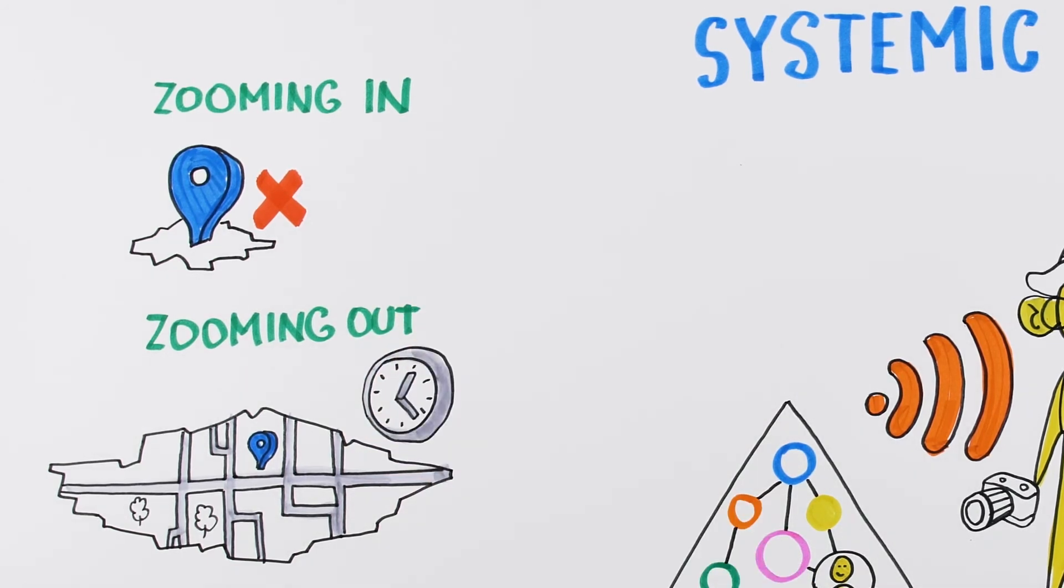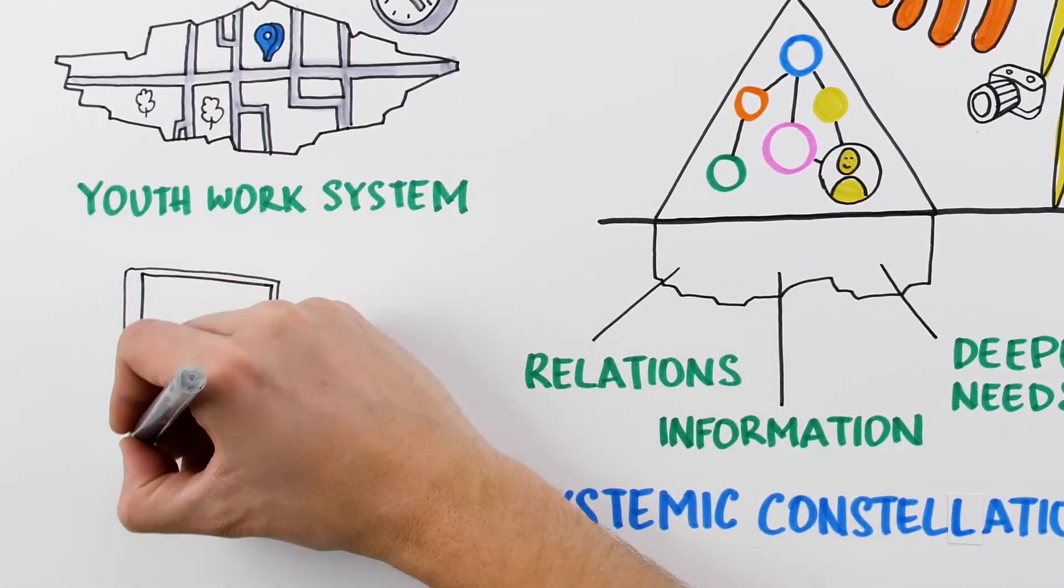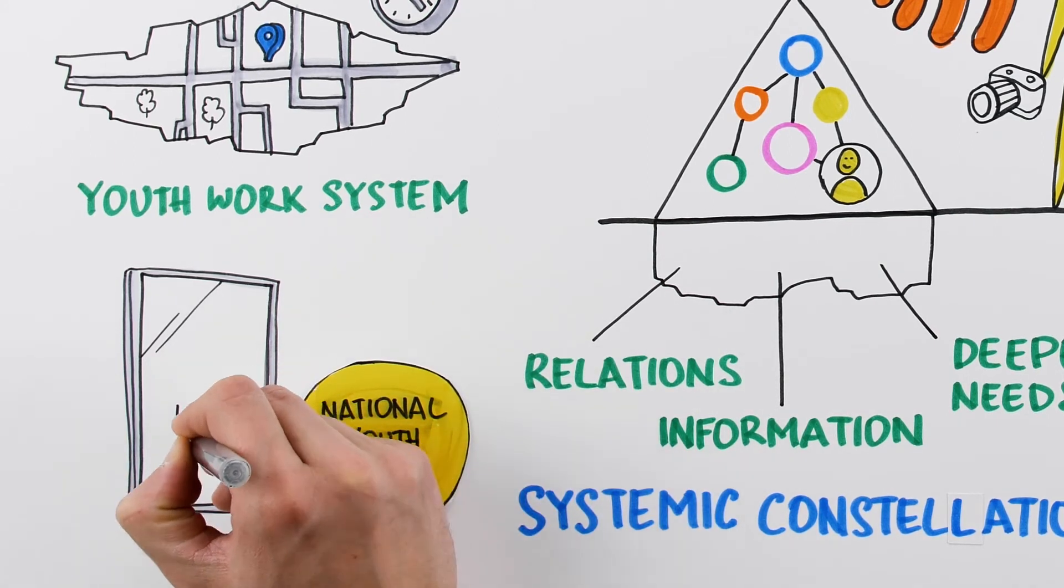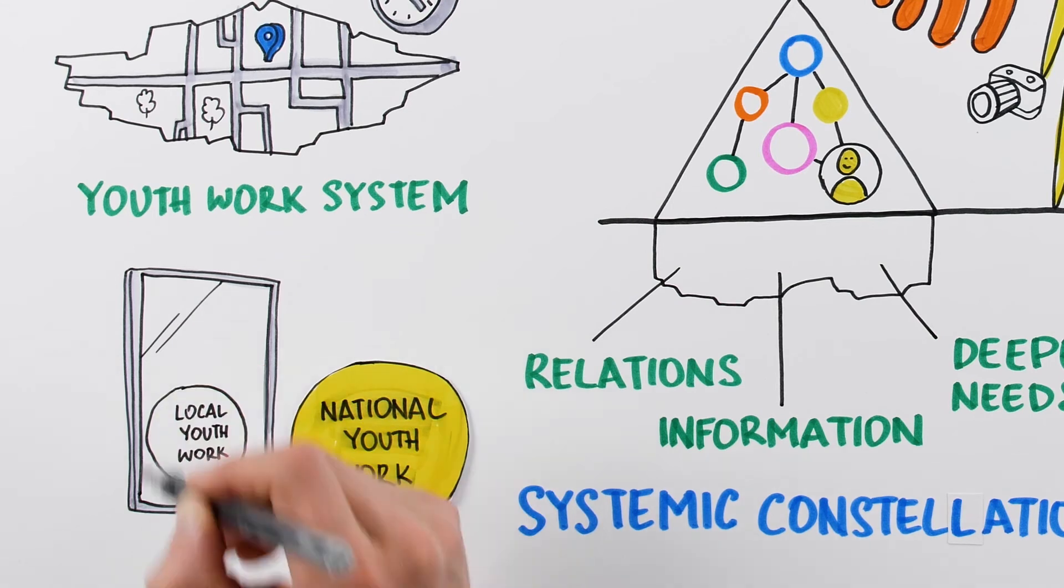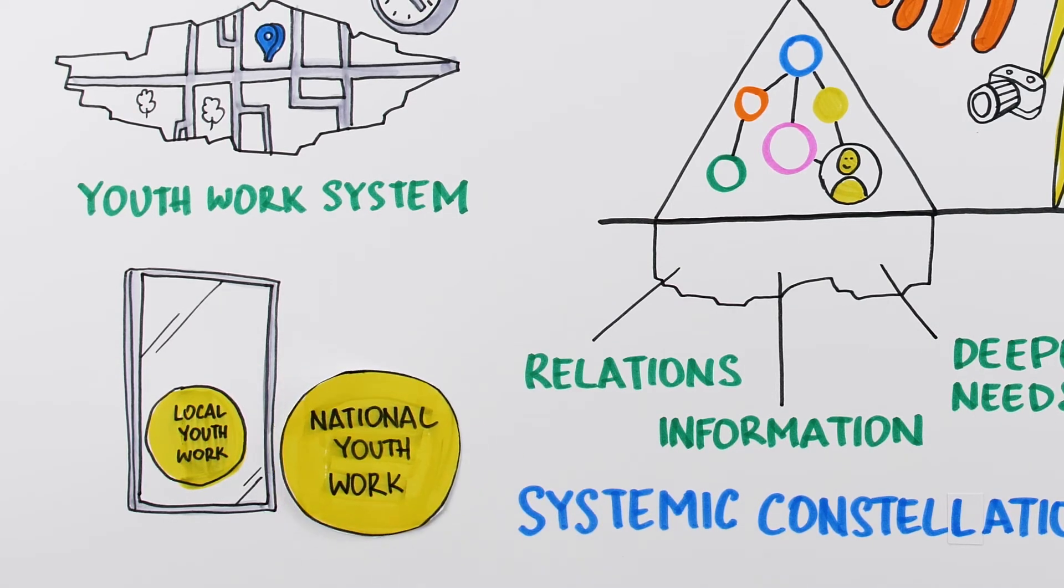For example, what is going on in your local youth work system may just be a reflection of what is happening at the national level, or what has been happening in your local context at the moment youth work has appeared. It is up to you to find the right distance from which you can see it clearly and completely.